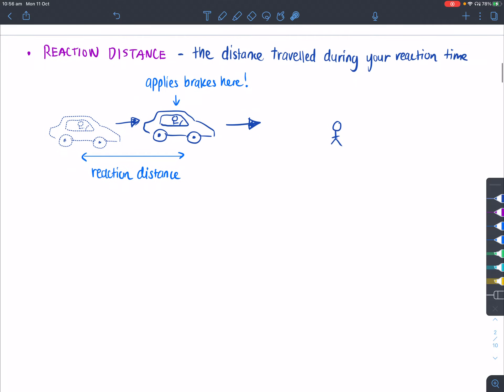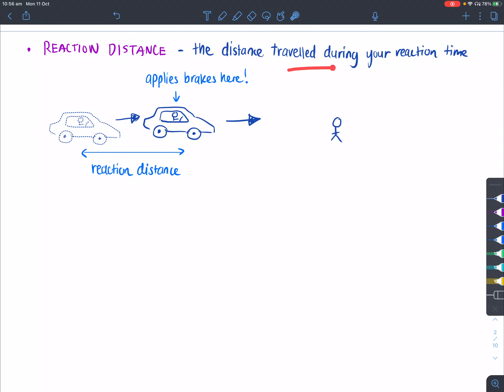Now, what about reaction distance? That is the distance traveled during your reaction time. So, between the time that you see the person and the time when you apply the brakes, you would have traveled some distance. Because the car is still moving. And even when you apply the brakes here, you are going to still move, but you're going to slow down. So, between these two places here, you're going to be traveling at constant speed of whatever it is.